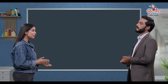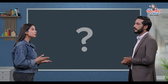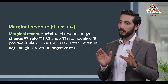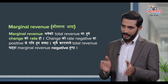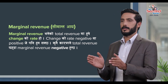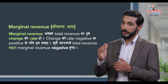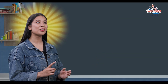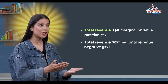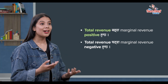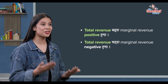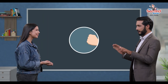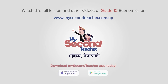When marginal revenue is minus 20 rupees, the business total revenue change rate is negative. If total revenue is increasing (positive), marginal revenue is positive; and when marginal revenue is negative, total revenue is also negative.